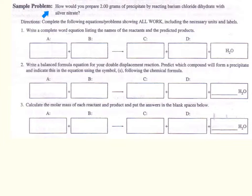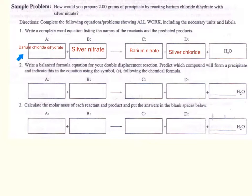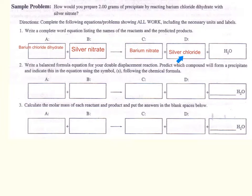The sample problem we will work through is: how will you prepare 2 grams of a precipitate by reacting barium chloride dihydrate with silver nitrate? The first thing I need to do is write out my equation. So I've written barium chloride dihydrate plus silver nitrate. This is a double replacement reaction where barium and silver trade places, resulting in barium nitrate and silver chloride as our products. The dihydrate becomes our water. The next step is to write a balanced equation.